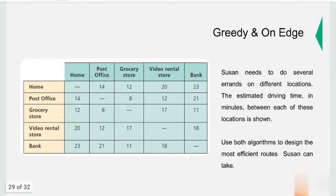Let's have a more real-life or closer to life application. Susan needs to do several errands at different locations. The estimated driving time in minutes between each of these locations is shown. Now we're given with time. Use both algorithms to design the most efficient route Susan can take. From her house to the post office that's 14 minutes, from the grocery store to the rental store that's 17 minutes, and so on.